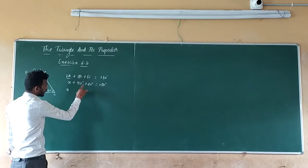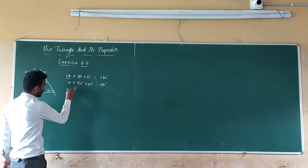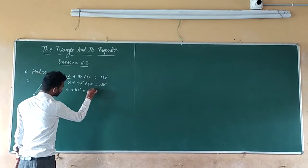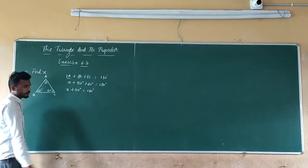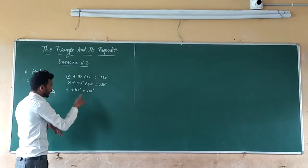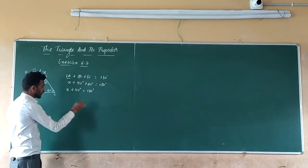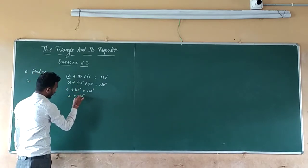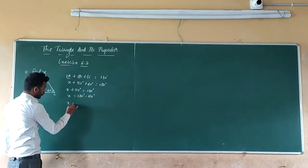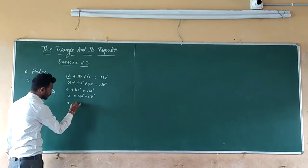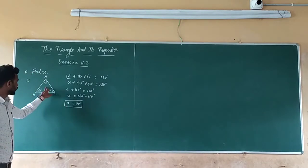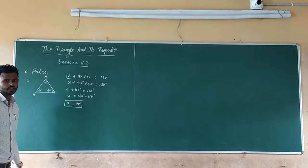So X plus 50 degrees plus 60 degrees. Adding those two angles: 50 plus 60 equals 110 degrees. Plus 110 degrees, which is equal to 180 degrees. So take 110 degrees to the RHS — that will become minus. So X is equal to 180 degrees minus 110 degrees. So X is equal to 70 degrees. The answer of the first point is X equals 70 degrees.